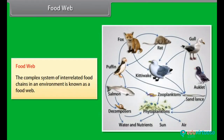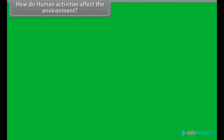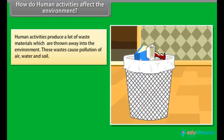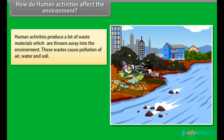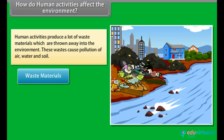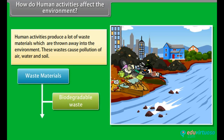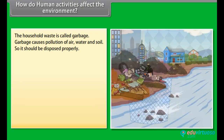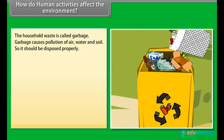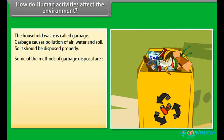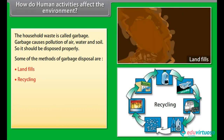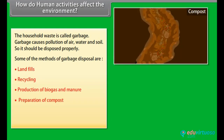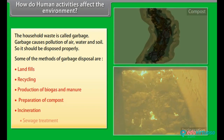The complex system of interrelated food chains in an environment is known as a food web. Human activities produce a lot of waste materials which are thrown into the environment, causing pollution of air, water and soil. Waste materials are of two main types: biodegradable and non-biodegradable. Household waste, called garbage, causes pollution and should be disposed of properly. Methods of garbage disposal include landfills, recycling, production of biogas and manure, preparation of compost, incineration, and sewage treatment.